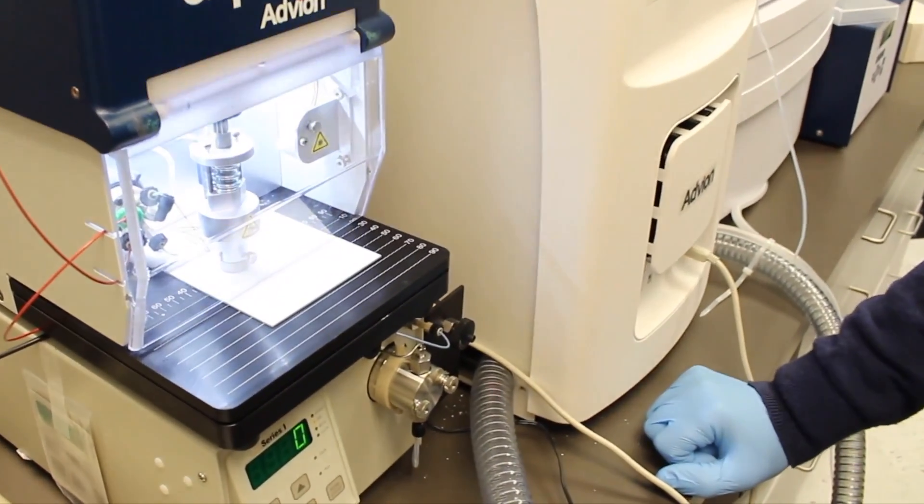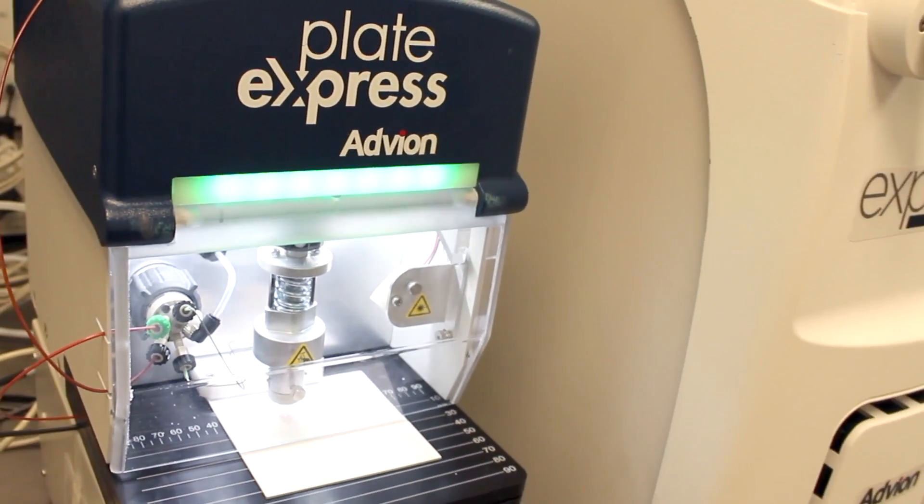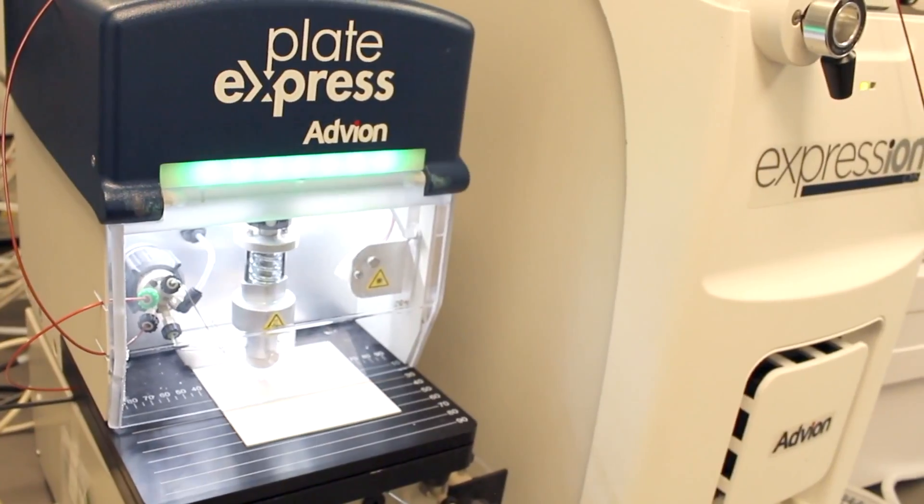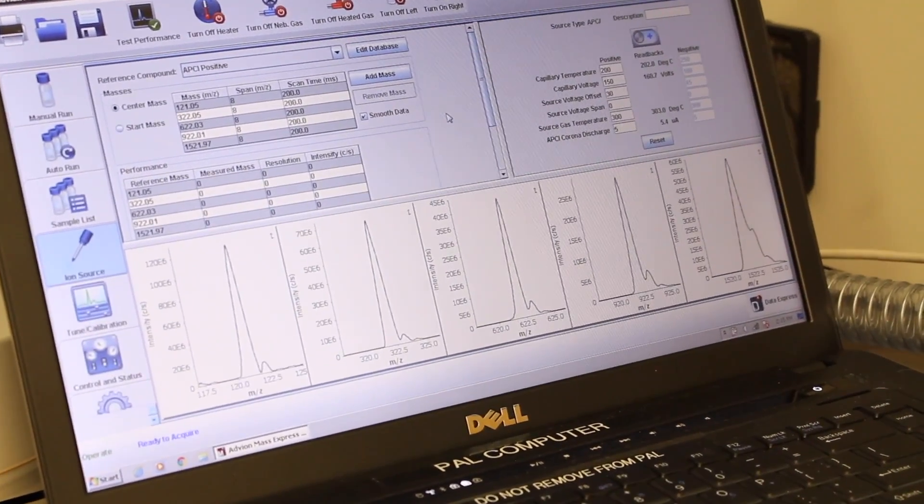The head will lower, seal the spot of interest, and solvent will extract the compounds into the mass spectrometer. You will view your data in the easy-to-use Mass Express software.